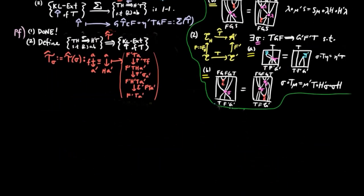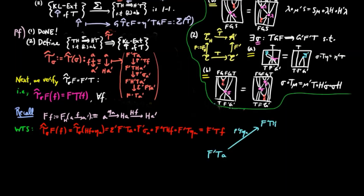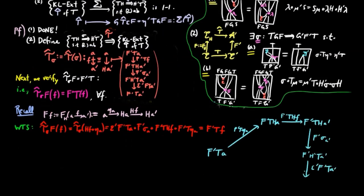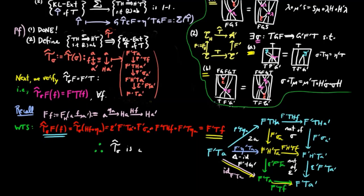To show T̃(σ) also respects identity morphisms, recall that the identity for the Kleisli category is the unit η of the monad H. Then T̃(σ) on the identity of A equals ε'_{F'TA} · F'σ_A · F'T·η_A, which equals ε'_{F'TA} · F'η'_{TA} by property 2A — which is the identity on T̃(σ)(A) by the triangle identity for F'G'. Therefore, T̃(σ) respects identities, and thus T̃(σ) is a well-defined functor. Next, we verify that T̃(σ) is a Kleisli extension of T along F and F', i.e., T̃(σ)·F equals F'T. Using naturality of σ, naturality of ε', property 2A, and the triangle identity for F'G', we get equality with F'TF. Therefore, T̃(σ) is a Kleisli extension of T.